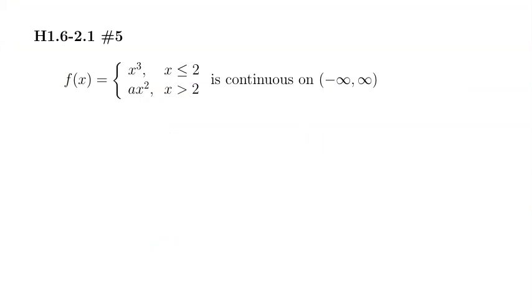If you look at each one, x cubed is a cubic function, which is a polynomial, so it's continuous by itself. And the second formula is a quadratic function, another polynomial function, so it's continuous everywhere. The only discontinuity that could happen is right at the gap between these two, which is x equals 2. If this function is continuous everywhere, we have to make sure that it is continuous at 2.